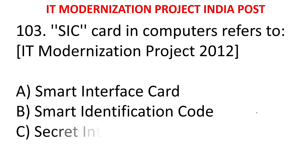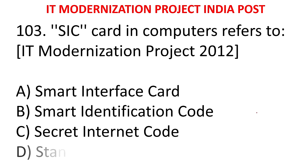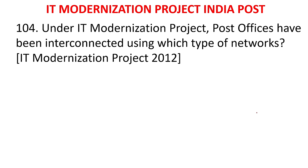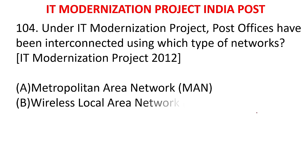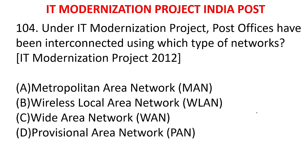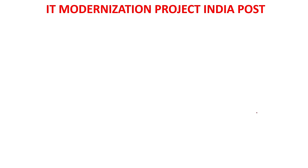MCQ 99: SIC card in computers refers to - A) Smart Interface Card, B) Smart Identification Code, C) Secret Internet Code, D) Standard Interface Card. The answer is Smart Interface Card. MCQ 100: WAN has been introduced to which type of network? A) Metropolitan Area Network, B) Wireless Local Area Network, C) Wide Area Network, D) Provisional Area Network. The answer is Wide Area Network.